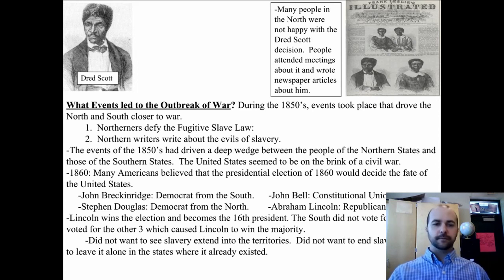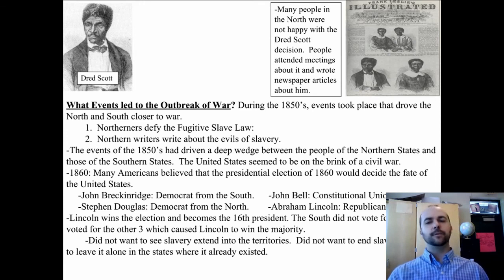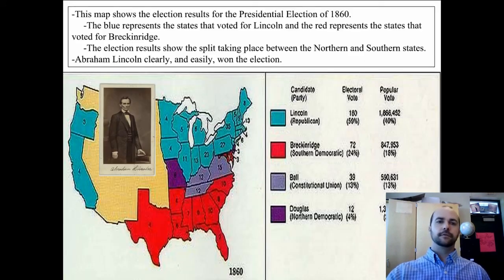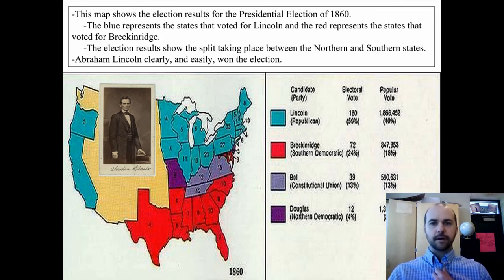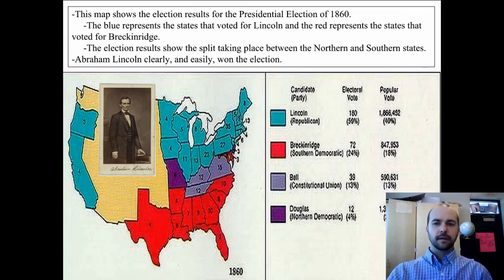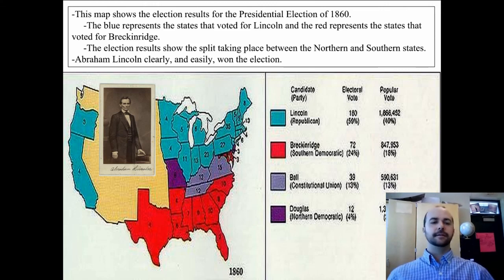Once Lincoln won, he didn't want to see slavery extend into the Western territories. While he didn't want to end slavery where it already existed, he didn't want it to spread. The election results show Lincoln winning all the Republican-controlled areas in the North, clearly illustrating the split between North and South. Lincoln won the popular vote and the electoral majority, becoming the 16th president in 1860. Next time, we'll see what happens after his election.